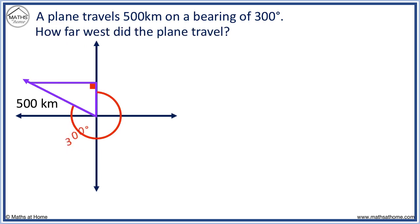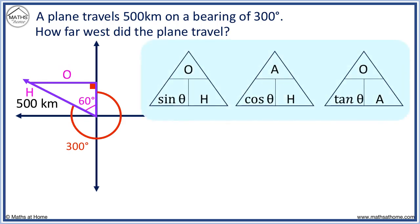If this is 300 degrees, θ equals 60 degrees. The distance west is the opposite side, and the 500 kilometers is our hypotenuse. We have O and H, so we use this triangle. We want O, so we cover up O. We have sin θ times H.